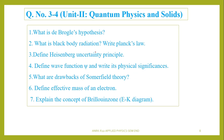When it comes to quantum mechanics, we have de Broglie hypothesis, black body radiation, and we have to remember Planck's law. Then Heisenberg uncertainty principle and wave function and its physical significance. Then the drawback of Sommerfeld theory. What do you mean by effective mass of the electron — this one also they will ask. Then explain the concept of the Brillouin zone or E-K diagram — energy and propagation constant diagram we have to write.